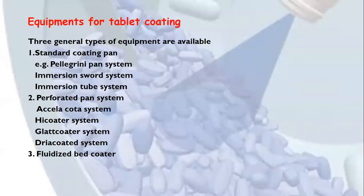Equipment for tablet coating includes the standard coating pan, which is provided with the Pellegrini Pan System, Immersion Sword System, or Immersion Tube System, and the Perforated Pan System which includes the Accela Coater System, Hi Coater System, and Glatt Coater System. The fluidized bed coater is also modern equipment used for tablet coating.